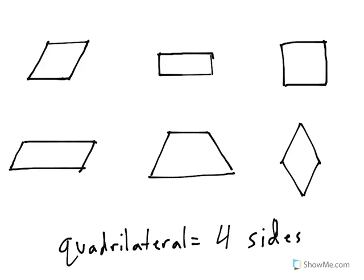At the top left, I can see that I have four sides, and each of these sides seems to be the same length. When you have a shape that has four sides, they're all equal length, but there are no right angles — that's what we call a rhombus.